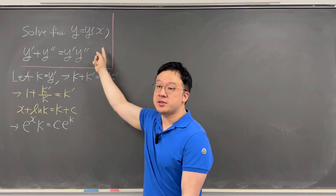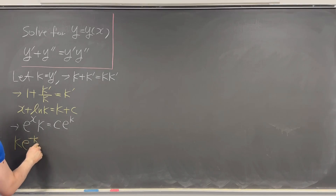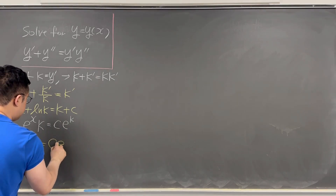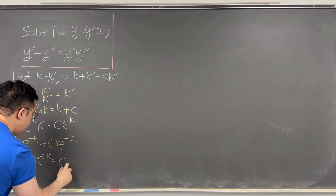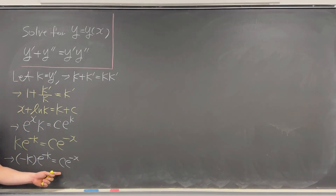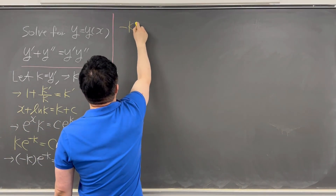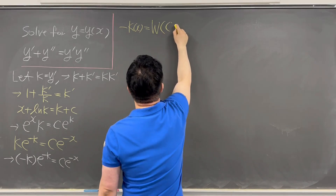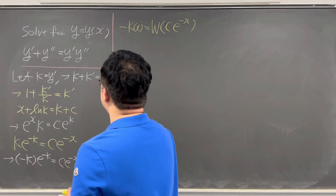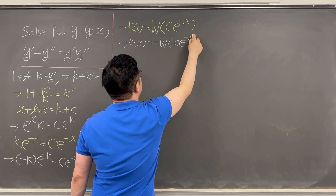Our goal is to represent y(x) using the Lambert W function. From the exponentiated form, we can write k · e^(−k) = c · e^(−x). Then −k · e^(−k) = c · e^(−x), since c is just a constant. Therefore, −k(x) = W(c · e^(−x)), which means k(x) = −W(c · e^(−x)).